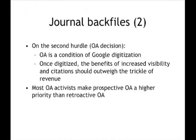Assuming back files could be digitized, the second hurdle might be cleared. If you let Google do it, one condition of Google's participation is open access — gratis open access, not libre. But even if a journal digitized hoping to sell access, I think it would discover before long that the benefits of open access exceed the trickle of revenue it would really get. Journal revenue really comes from new issues. If a journal gave up that trickle of revenue from old issues in favor of open access, it would have much wider visibility and impact — even citations — which would boost its impact factor.